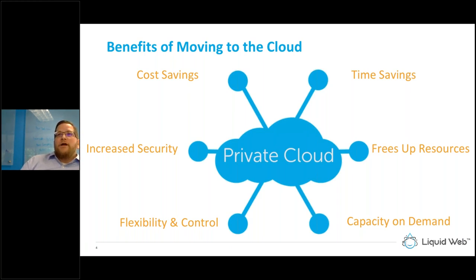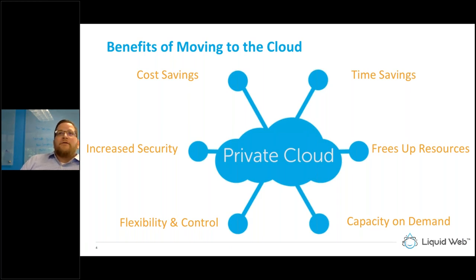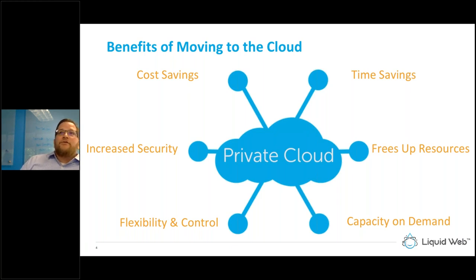Capacity on demand tilts more toward public clouds, which offer a nearly infinite pool of capacity that can be spun up in minutes. However, a lot of clients who think they need that capacity on demand really just need faster capacity than racking a server or ordering a dedicated server. Private cloud gives capacity on demand differently — not thousands of servers waiting on a request, but it does give you the ability within a finite resource pool to add capacity, re-architect, resize, and change VM attributes on demand.